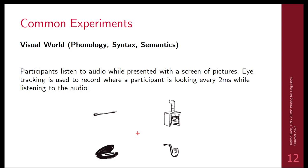Visual world is another common paradigm. The idea is that as you listen to people speak, your eyes fixate on the thing they're talking about if it's available in your vision. Participants listen to audio with their eyes focused on the center of the screen, and as they listen they look at different pictures if relevant. You can track how someone processes information based on what they look at while listening to words.